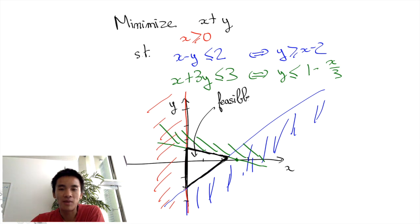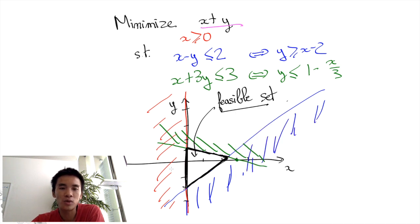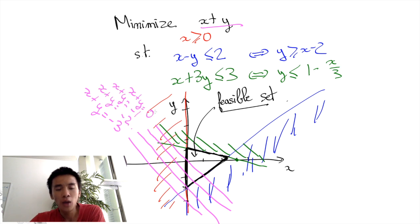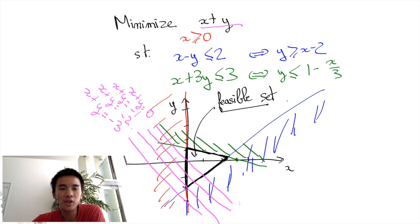Finally, we can represent the objective function x plus y by drawing its level sets. Namely, we represent the different lines that correspond to equalities x plus y equals minus 3, x plus y equals minus 2, x plus y equals minus 1, and so on. You can see that there is a direction according to which x plus y decreases, and this direction is the bottom left direction. We say that the bottom left direction is the gradient descent of the objective function.